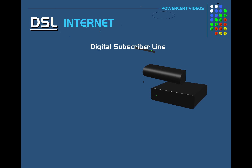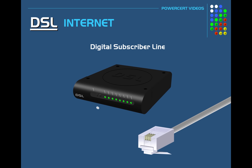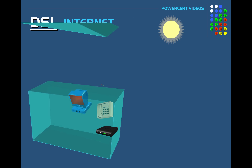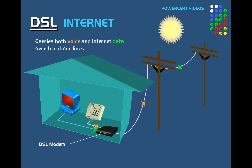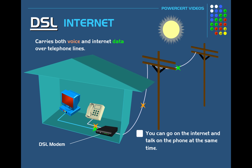DSL stands for Digital Subscriber Line. DSL is another popular technology used by homes and businesses to access broadband data over the internet. DSL can carry both voice and data at the same time over phone lines. It has a DSL modem that uses common telephone lines to carry its data. Because DSL uses phone lines, you don't want to confuse it with the older, painfully slow dial-up connection — DSL is much faster, and you can go on the internet and talk on the phone at the same time, unlike dial-up.